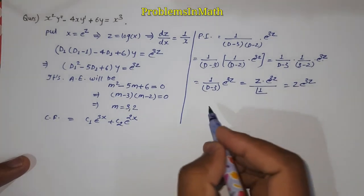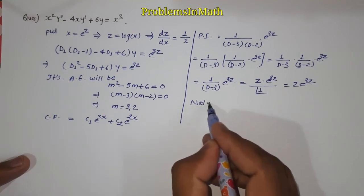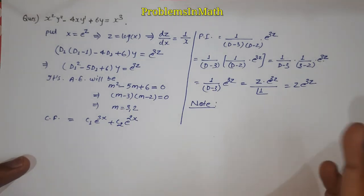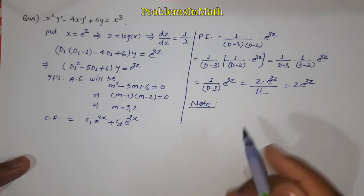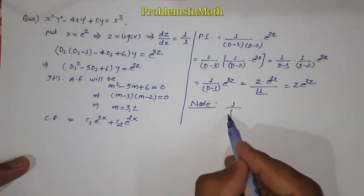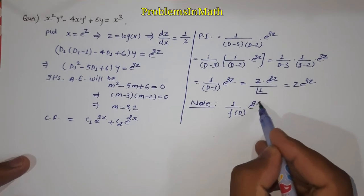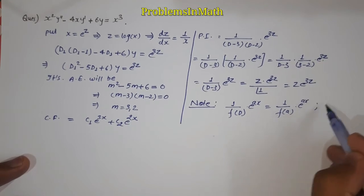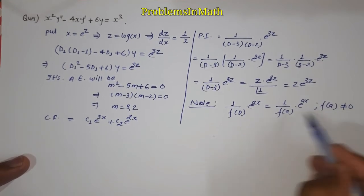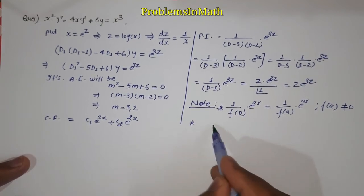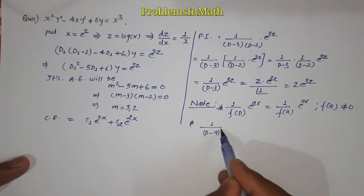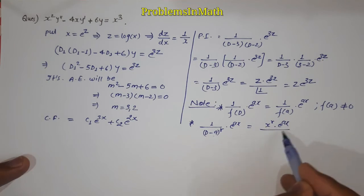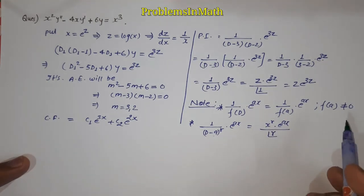Now here I am going to tell you two very important formulas which you need to remember for any exam. First formula: 1 upon f(D) e to power ax is equal to 1 upon f(a) times e to power ax, provided f(a) does not equal to 0. Second formula: 1 upon (D minus a) to the power r times e to power ax equal to x to the power r times e to power ax upon factorial r.